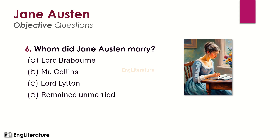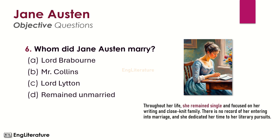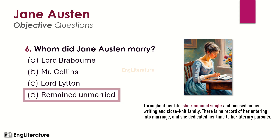Whom did Jane Austen marry? Throughout her life she remained single and focused on her writing and close-knit family. There is no record of her entering into marriage; she dedicated her time to her literary pursuits. The right choice is number D — Jane Austen remained unmarried.